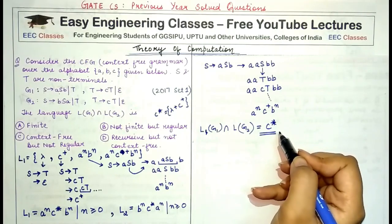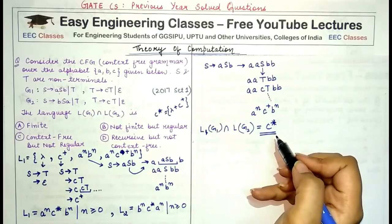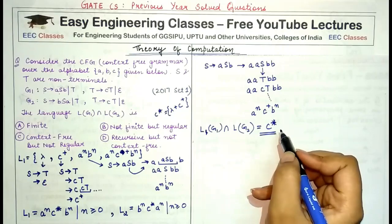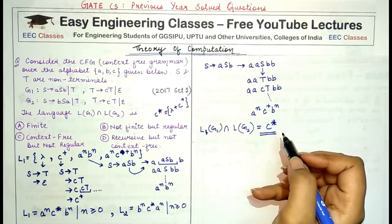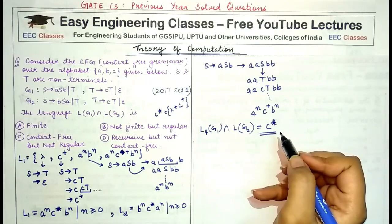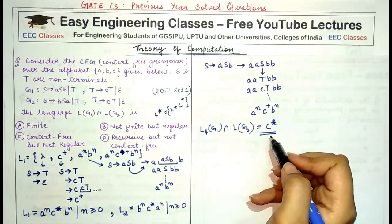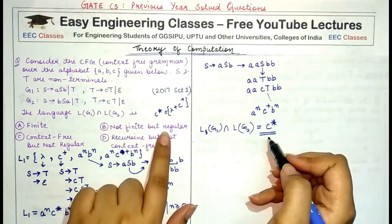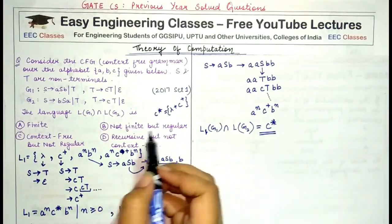This is already a regular expression, so it is a regular language. It is not finite — it is infinite — because in c* you can accommodate many strings: the empty string, a single c, multiple occurrences of c, with no finite upper bound.